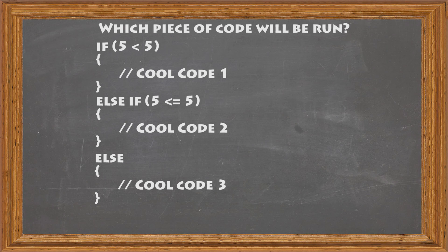If you just said the else if statement, you are completely correct. The if statement 'five is less than five' evaluates to false, and the else if statement 'five is less than or equal to five' of course evaluates to true.